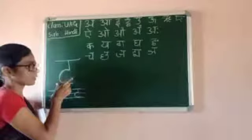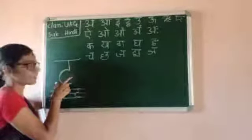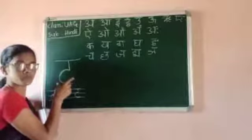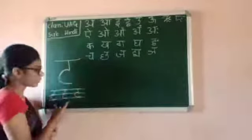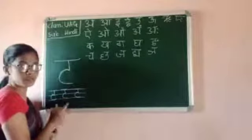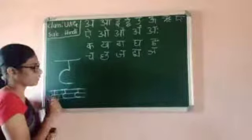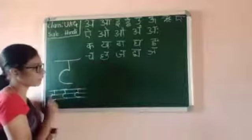First you trace it. Take your pencil and trace it first. Then next you write in your three-line notebook, children. Read and write — you must read it and write it.